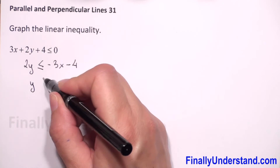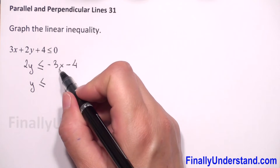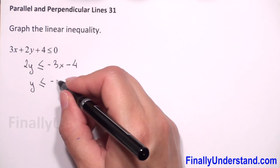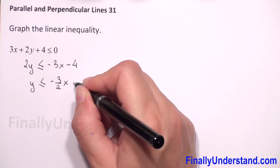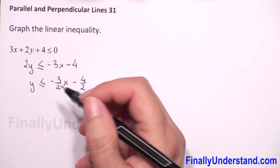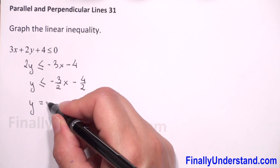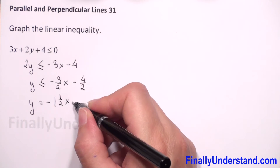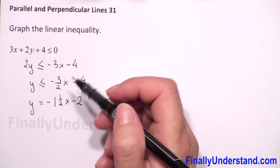Now I will divide both sides by 2, so we have y is less than or equals. I have to divide negative 3x by 2 and negative 4 by 2, so we have negative 3 over 2 times x minus 2. So y is equal to negative 1 and one half x minus 2.